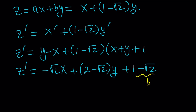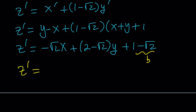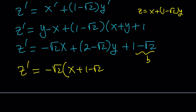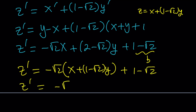From here, z prime can be written as a multiple of z plus a constant. We're trying to write this as negative root 2 times, let's take out a negative root 2, giving us x plus 1 minus root 2·y — which happens to be z — and then the additional 1 minus root 2. In other words, z prime can be written as negative root 2·z plus 1 minus root 2.